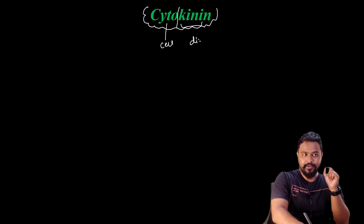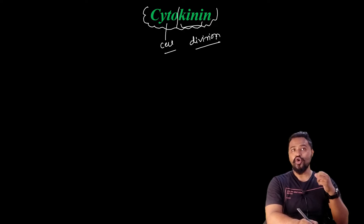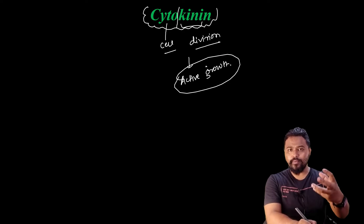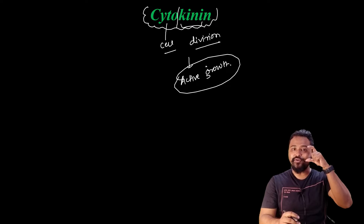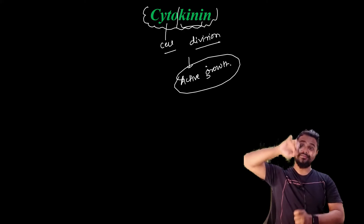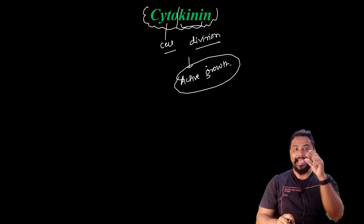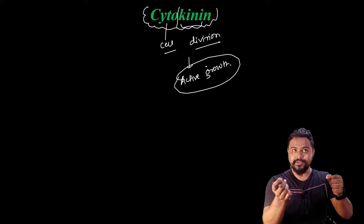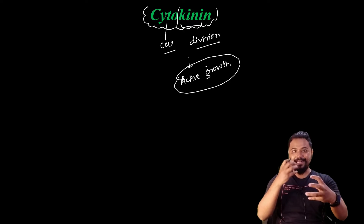Cytokinin means division. This cytokinin hormone means cell division. Cytokinin is active growth — cells elongate, but cytokinin specifically refers to cell division. So cytokinin is mainly about growth and division.